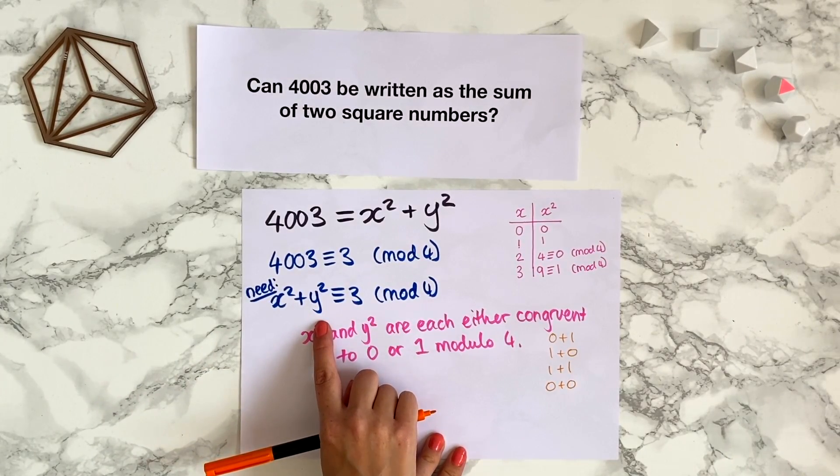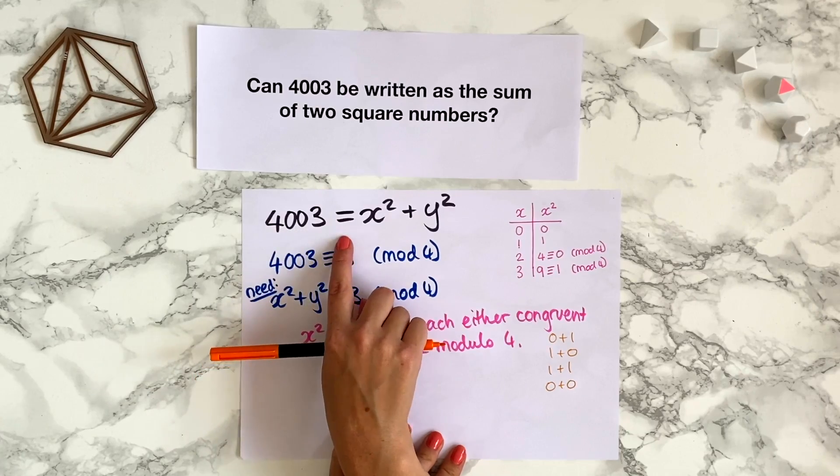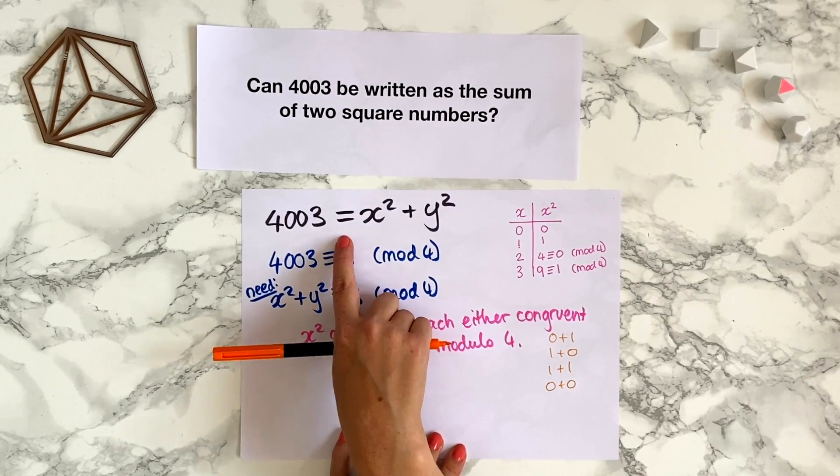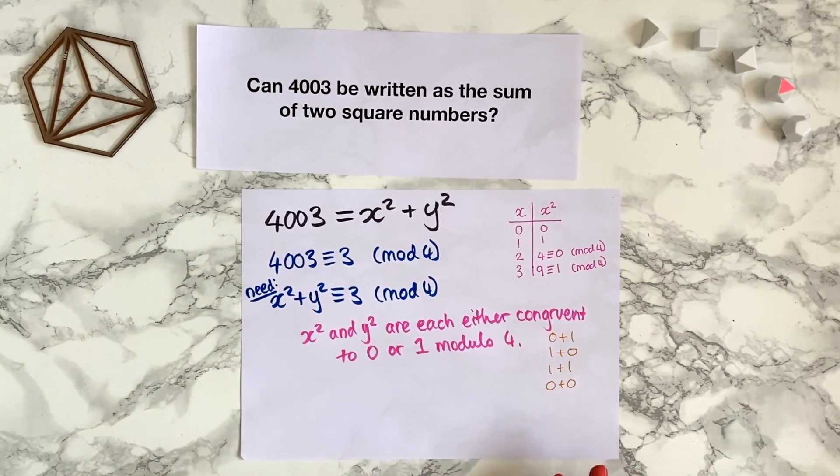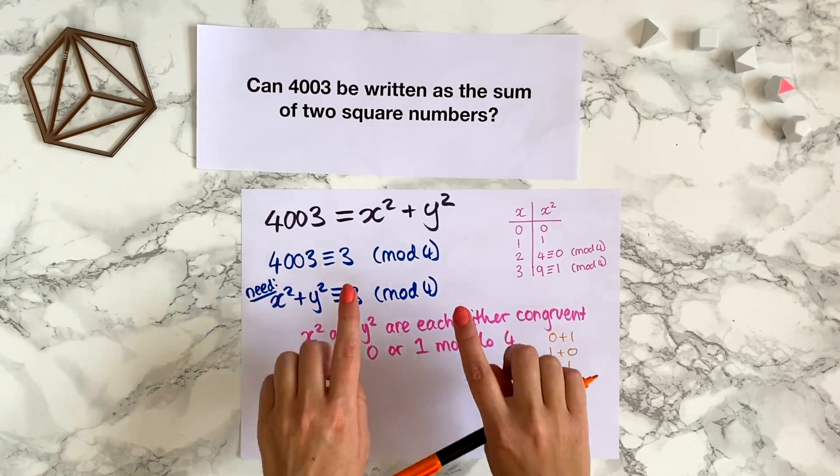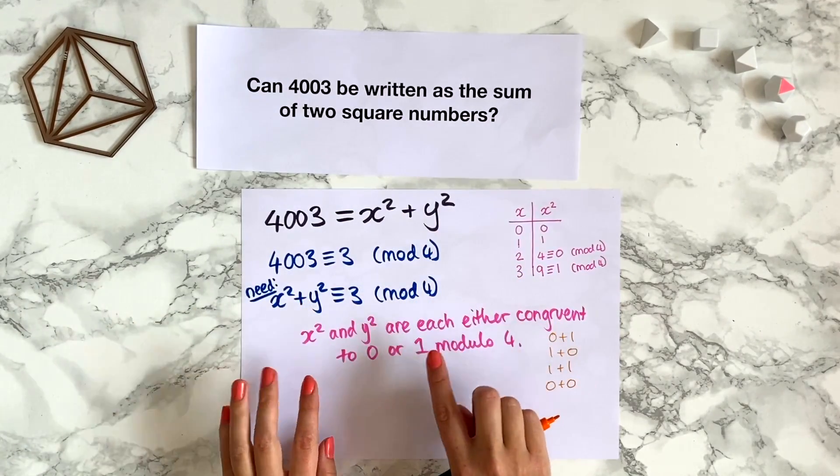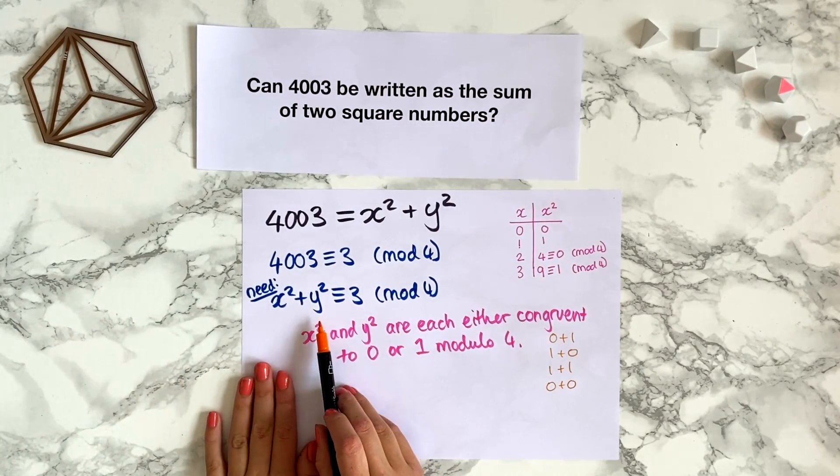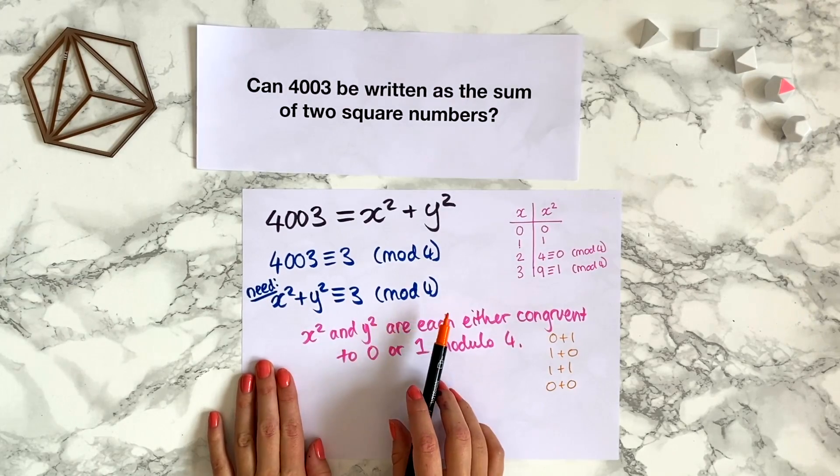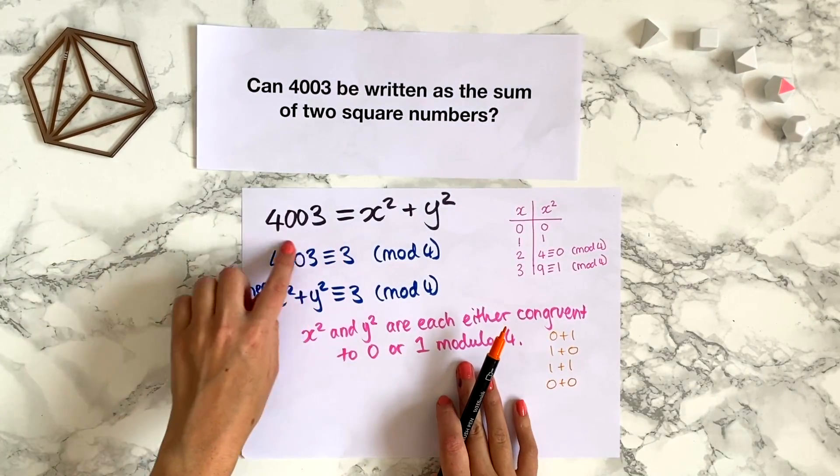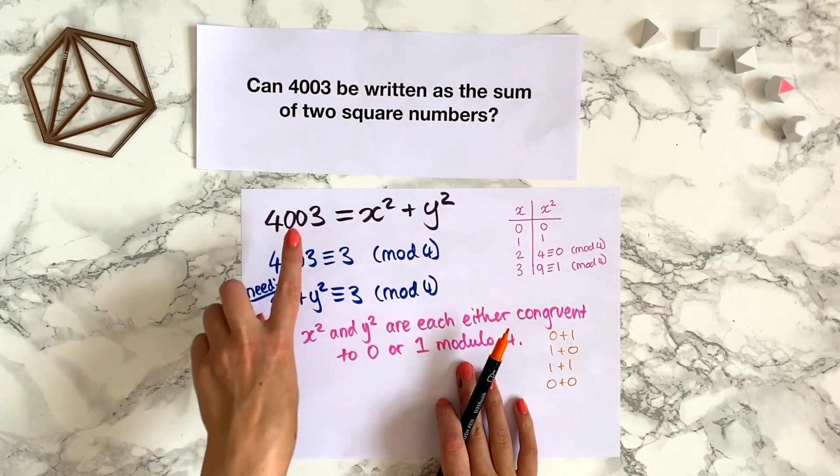So this proves that 4003 cannot be written as the sum of two square numbers. So what we've done here is a proof by contradiction. We've sort of said, let's suppose that 4003 can be written as the sum of two square numbers, in which case we would have to have that x squared plus y squared is congruent to 3 modulo 4, simply because 4003 is and these two things are equal.